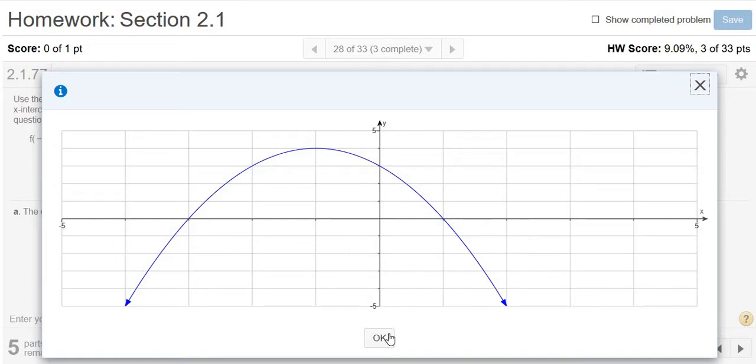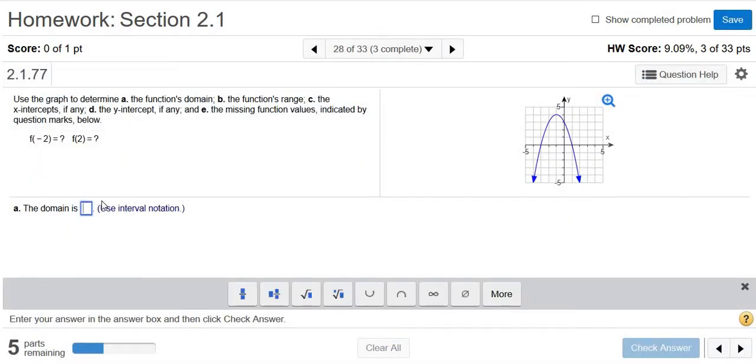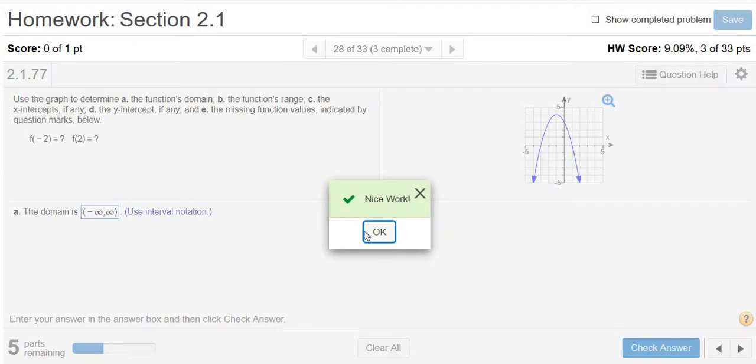So I can pick any single number, and they'll all give me y-values. So negative infinity to infinity should be the answer for the domain. So I'm going to click OK, come back over here, and then I'm going to type in parentheses, and then negative, and then click the infinity symbol down here, and then comma, and then click the infinity symbol again, parentheses, and then hit check answer. Boom, there it is.